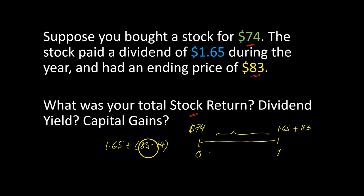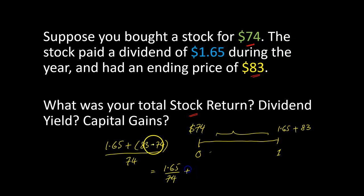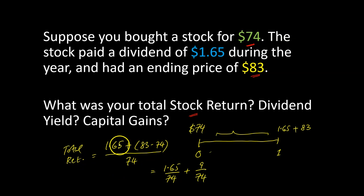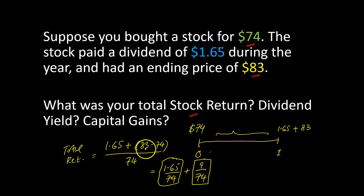By investing $74 I got something that was worth $83, so I benefited by about $9 — the difference between $83 and $74. This is the total dollar amount that you made on a $74 investment. Breaking it down further: this equals $1.65 divided by $74, plus $9 divided by $74. The first part is known as the dividend yield, and the second part — the difference between the prices — is known as the capital gains. So total return always equals dividend yield plus capital gains.